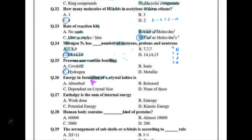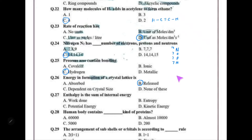Regarding the formation of a crystal lattice: a crystal lattice is the solid form, and solid is the lowest energy state of matter. Therefore, energy is released when a lattice forms. Lattice energy refers to the energy released when gaseous cations and gaseous anions come together to form a solid crystal.